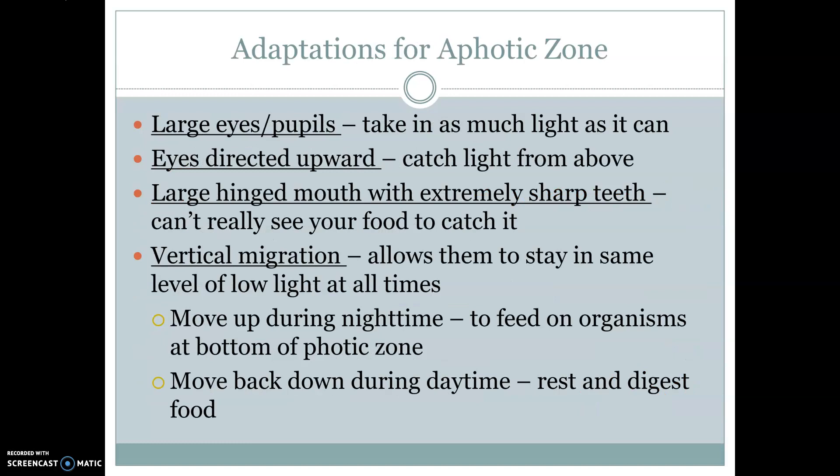Some adaptations that we're going to see with these animals: they're going to have very, very large eyes, and because of that, large pupils as well. When we adjust to the light, our pupils open and close depending on how much light is available. Since these animals don't have a lot of light, their pupils are going to be very large all the time to try to take in as much light as possible.